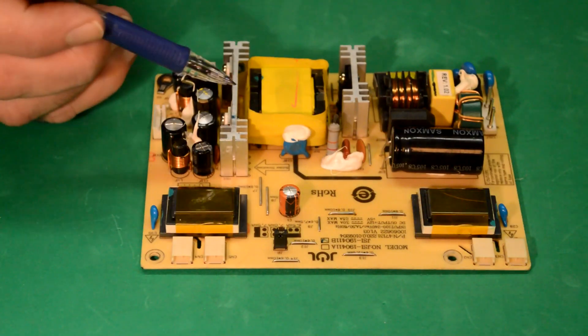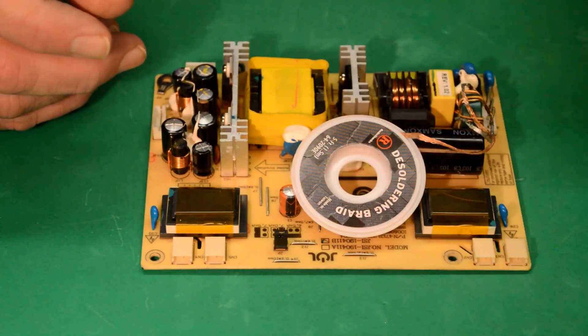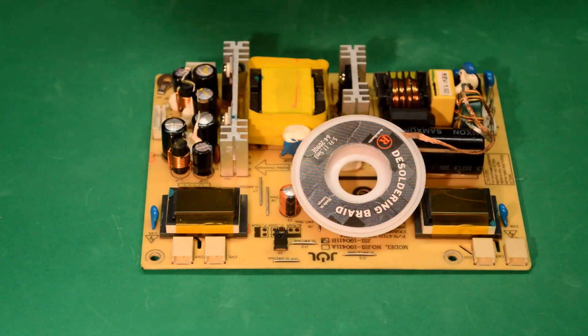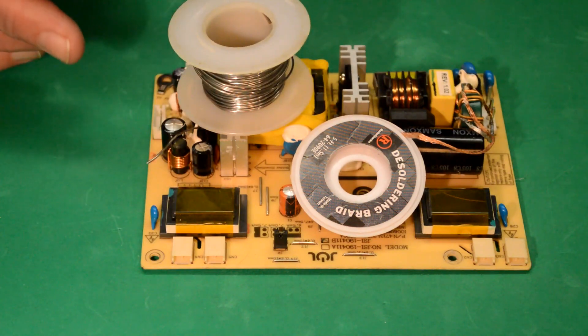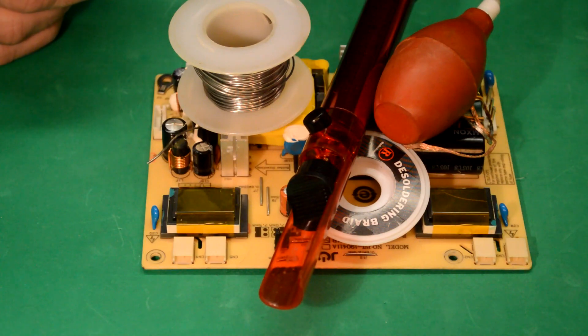And once I cut this glue stuff away, or silicone, with my knife, we'll use the desoldering braid, my super solder sucker and this pump. We'll get them out that way.